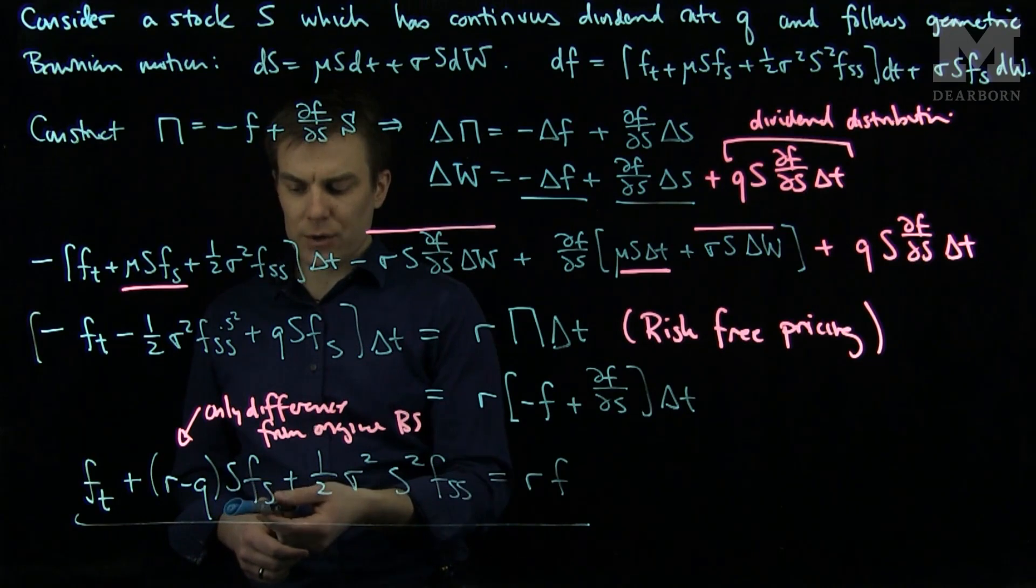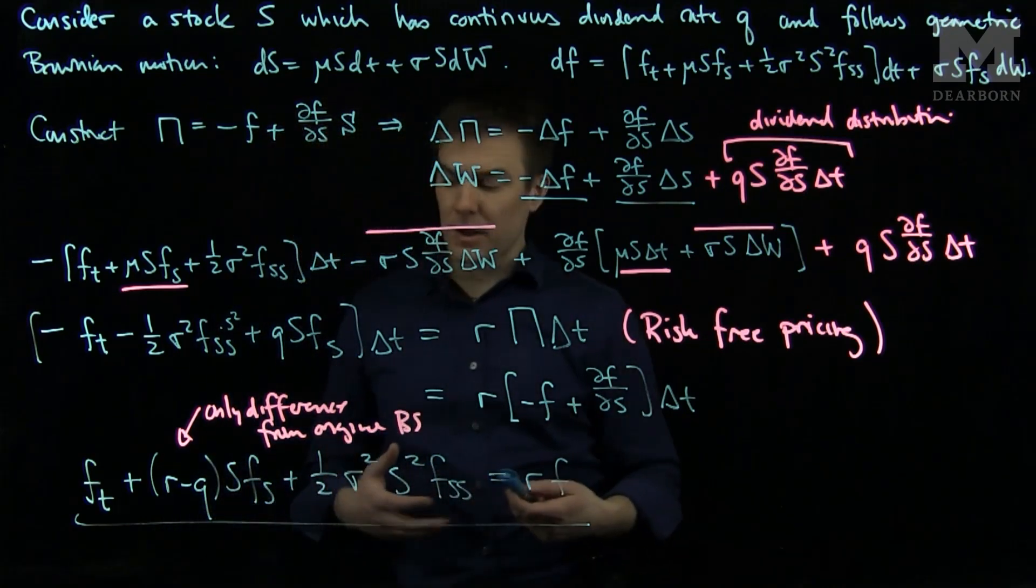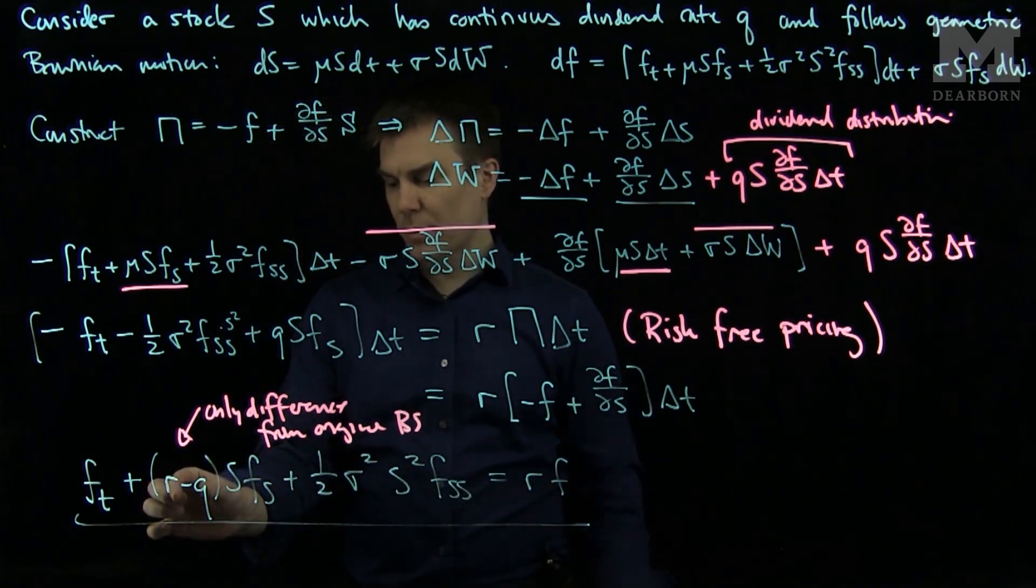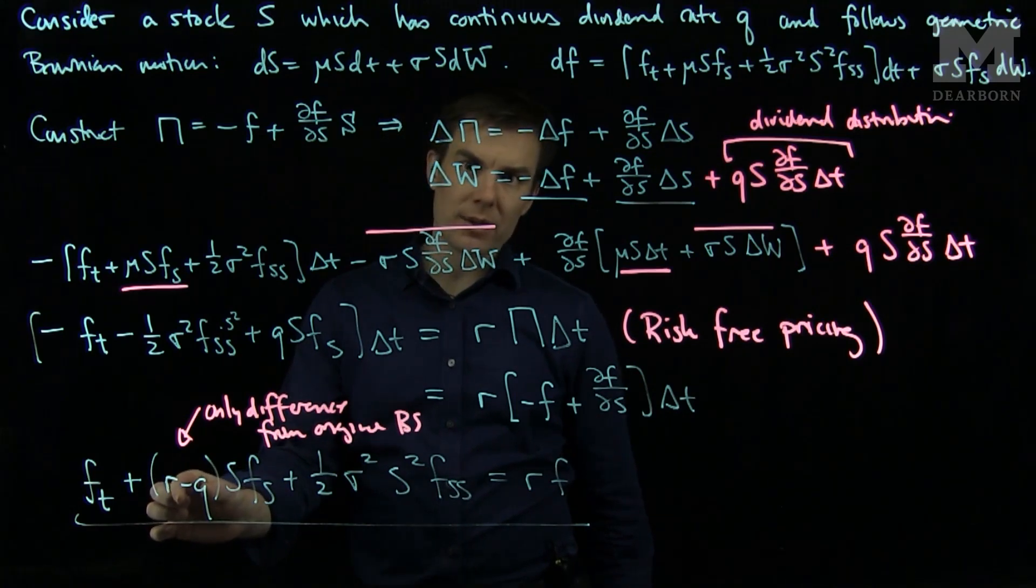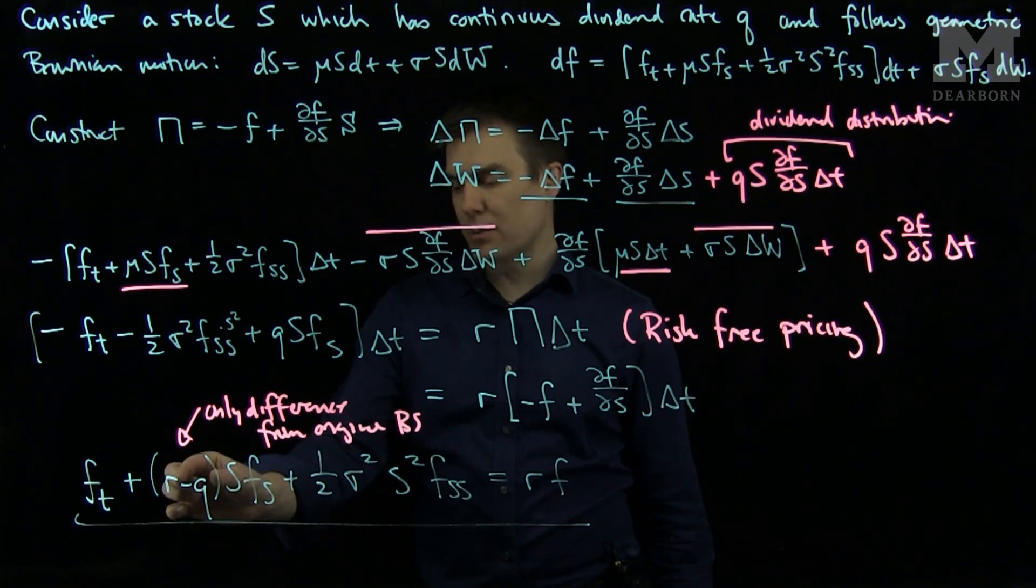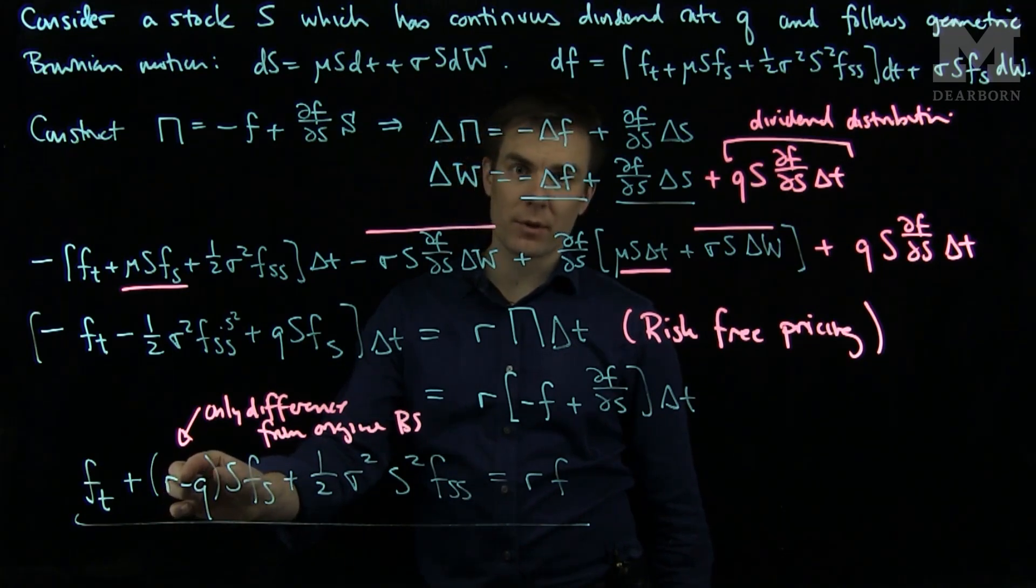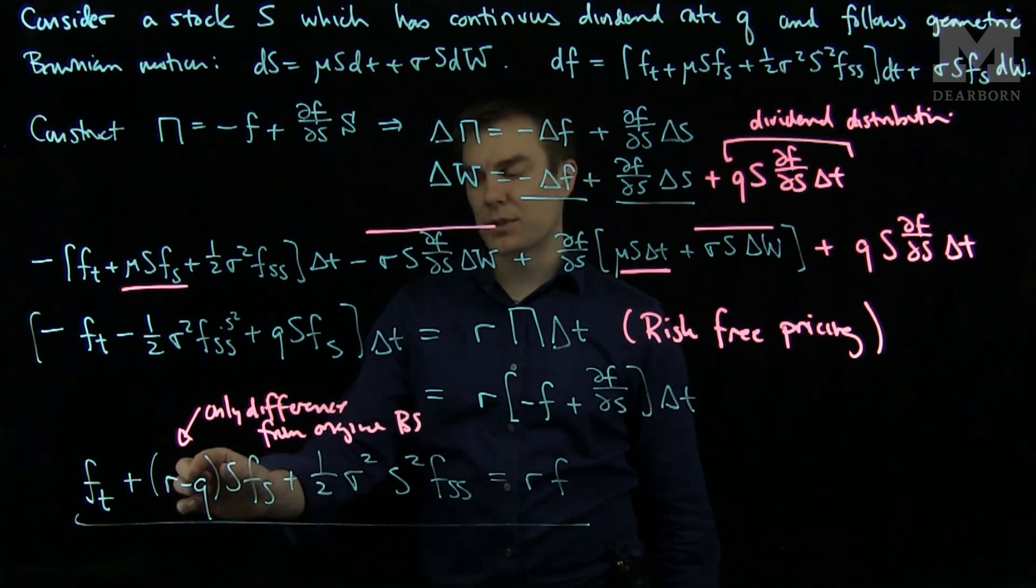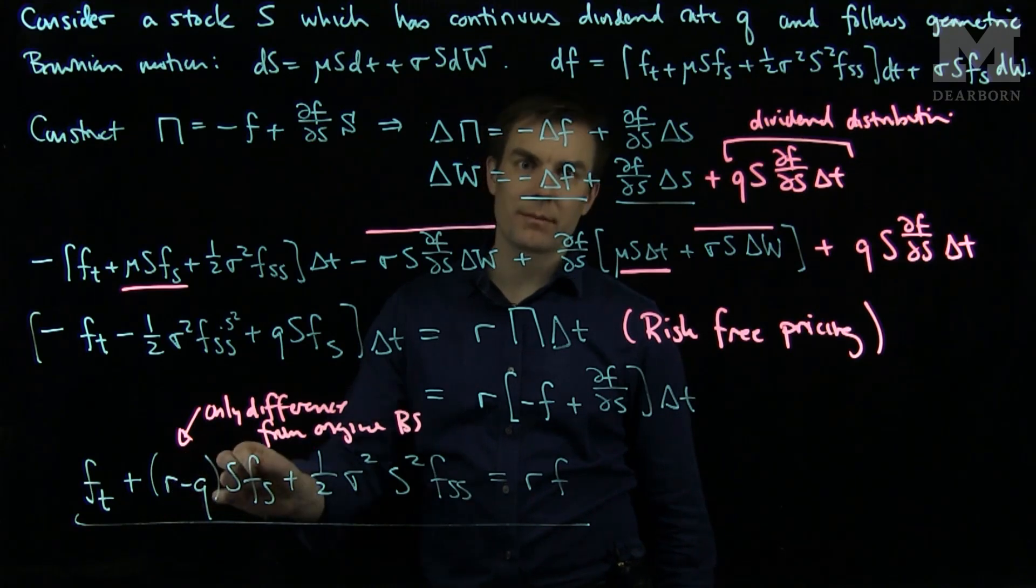So solving the Black-Scholes equation without a dividend is structurally the same as solving the Black-Scholes equation with a dividend. You just modify the risk free rate of return by subtracting off the dividend rate. And this dividend rate being subtracted off will appear in the same pricing for the call option and the put options that we will see in future videos for Black-Scholes. Thank you very much.